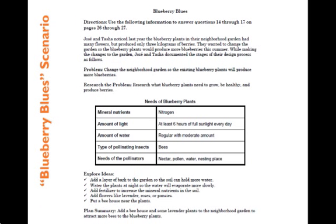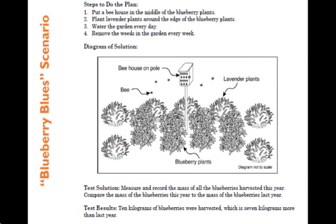In unpacking this scenario, we go back to an EOC practice item released by OSPI called Blueberry Blues, featuring Jose and Tasha. The gist of it is their neighborhood garden is not producing many blueberries and they want to increase blueberry production. The problem and research problem are listed, along with a variety of plant requirements in a table, followed by various steps to the plan and a diagram of the blueberry plant garden with a bee house in the middle.